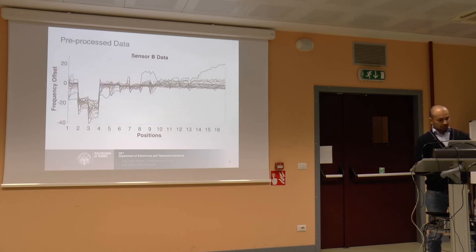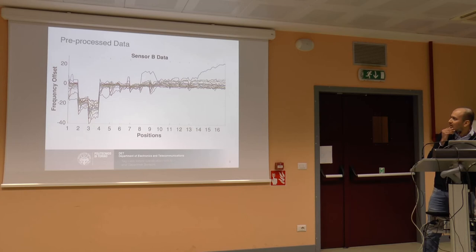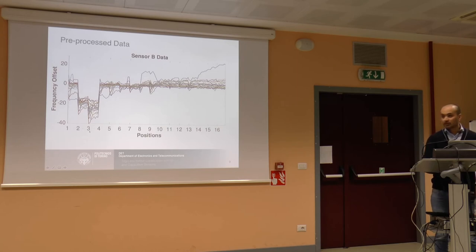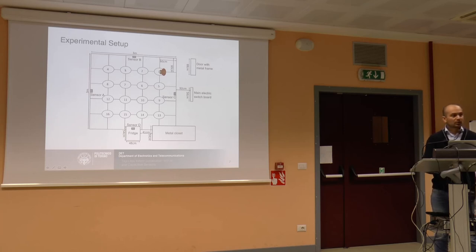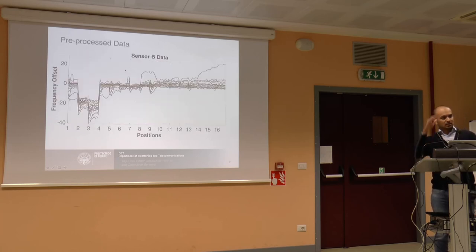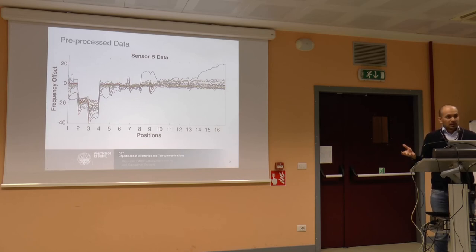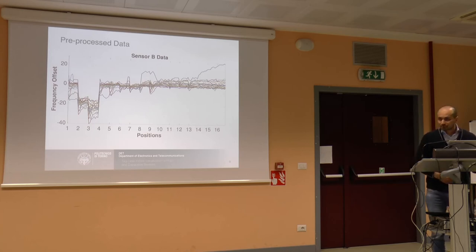We pre-process the data by removing the baseline, and this is the result. You can see it has a fairly large amount of noise. For example, at positions two and three the change was huge because I was standing very near to the sensor. But at other positions, when moving away from the sensor, the information is somewhat lost in the environmental noise — and that is beyond human inference. So at this point we will employ machine learning algorithms.